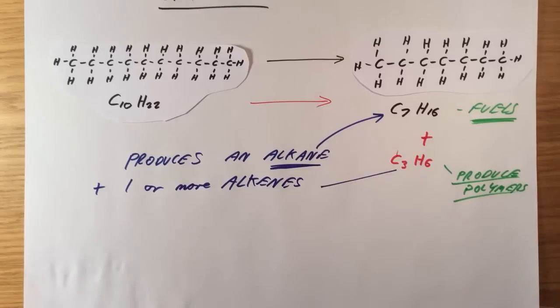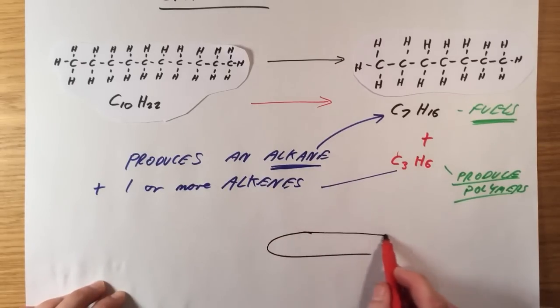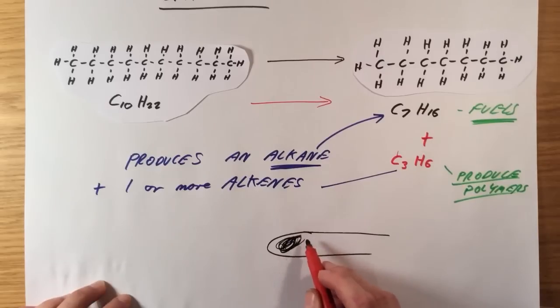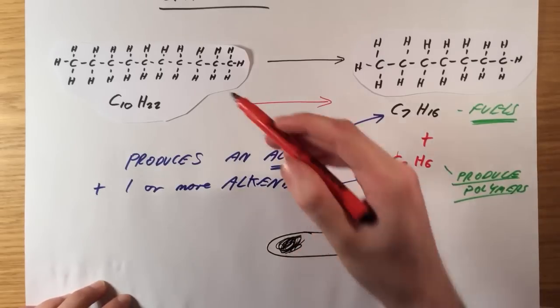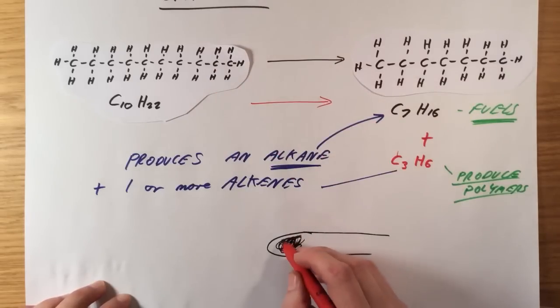How do we actually do this process then? Well, there's lots of different ways you could do this. In a lab, it would normally look something like this. You would normally have a boiling tube and you will have mineral wool, which is basically non-flammable but absorbent wool, which contains your long hydrocarbon.